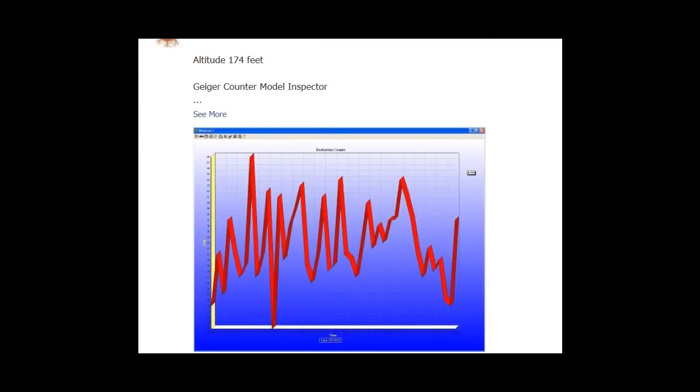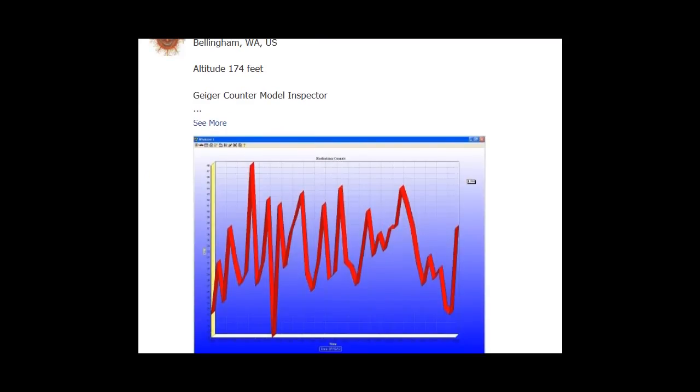All the Radiation Network West Coast North America Inspector Geiger counter graphs are seen in uptick currently. These are longer-term data sets from the last 12 to 14 hours, not short-time samples.